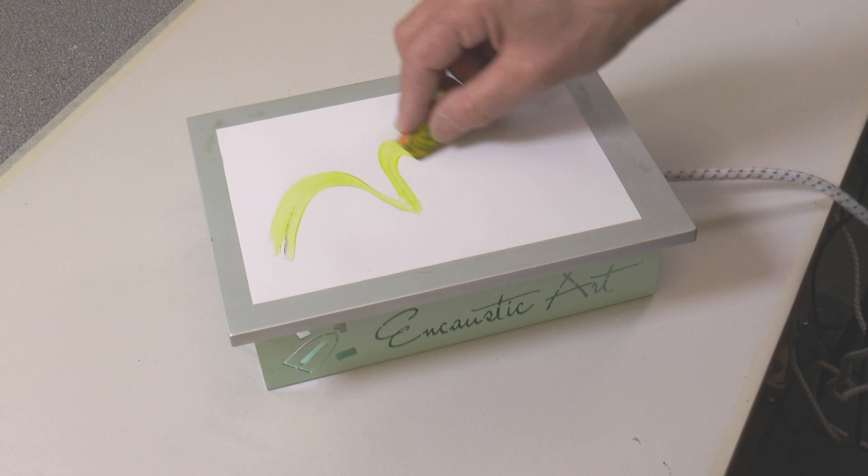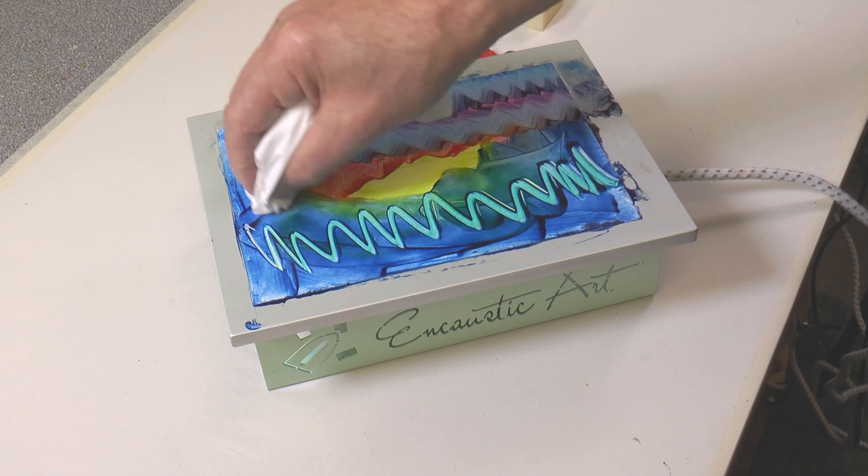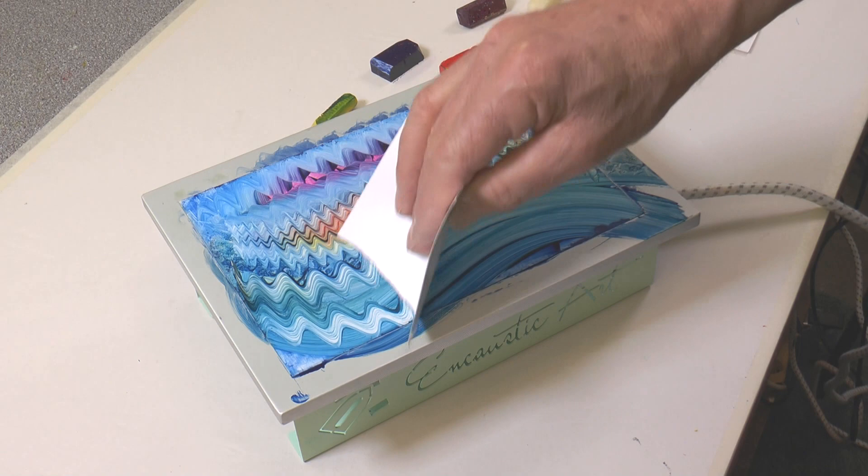As you work the temperature is coming up through the card and melting the wax. So you can crayon and melt. You can use tissues to rub and to dab. You can tear card and you can use that to make effects, marks to drag the wax around.